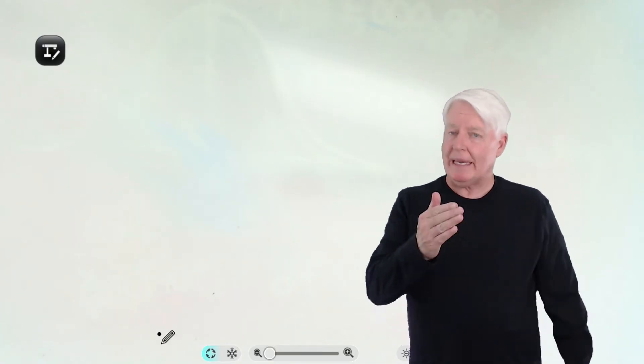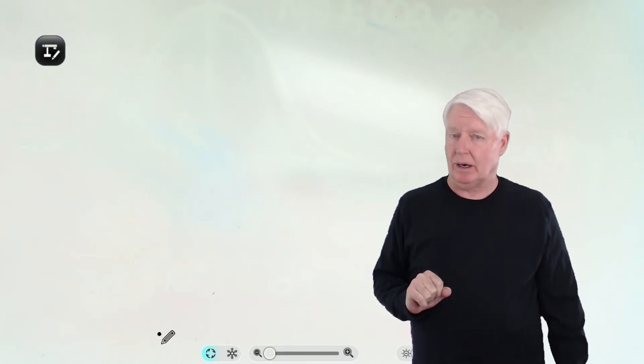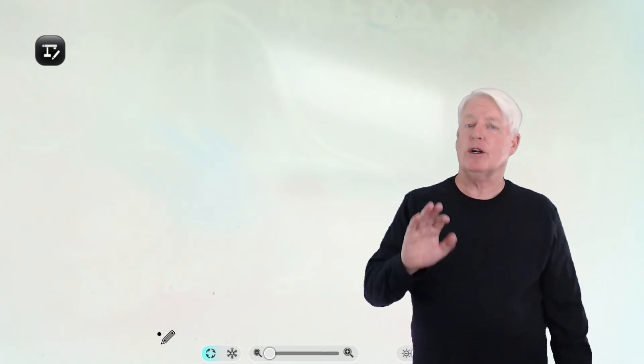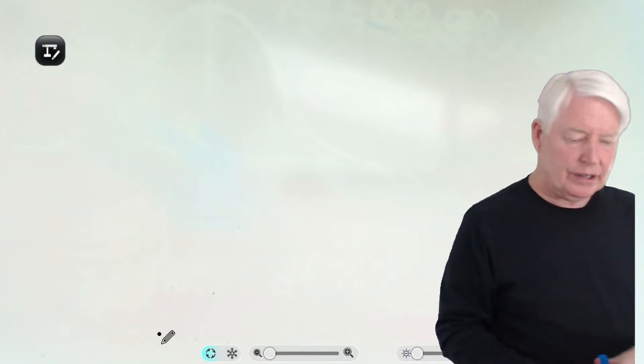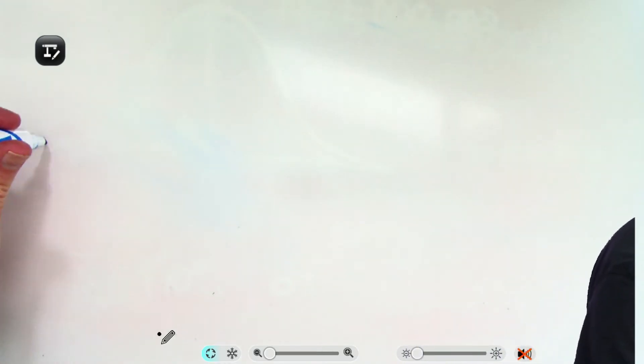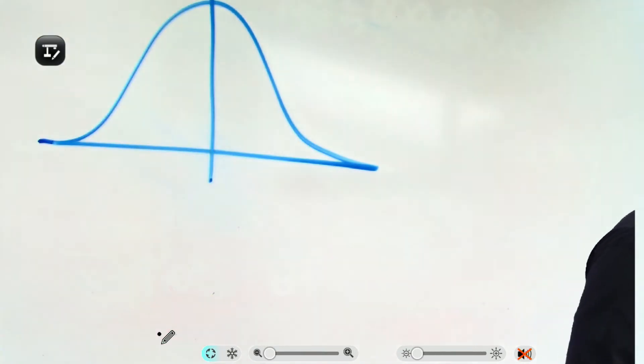Here we are at the whiteboard, so let me help you understand sampling error. It's really a pretty simple concept, but it's a very important concept to understand if you're going to become proficient at statistical analysis. So let's begin our discussion by drawing out a population distribution, there it is, normally distributed.